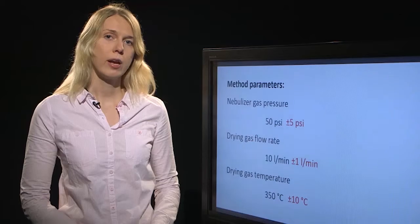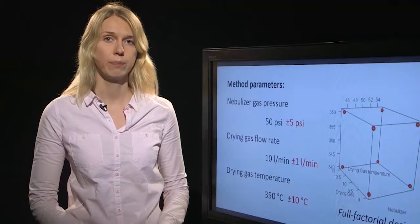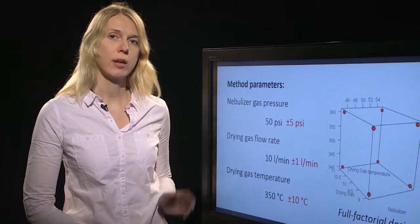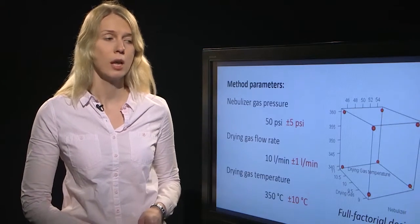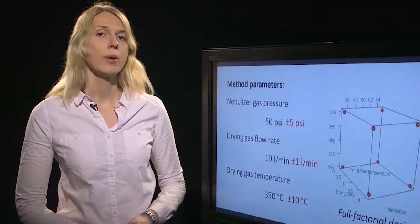To study these effects we can use a so-called cubic or full factorial design. This means that we evaluate the influence of these parameters to the sensitivity of diagloprate by carrying out all possible combinations of these parameter variations. However, if the number of parameters that may influence the sensitivity increases, the number of measurements with this full factorial design become quite large.